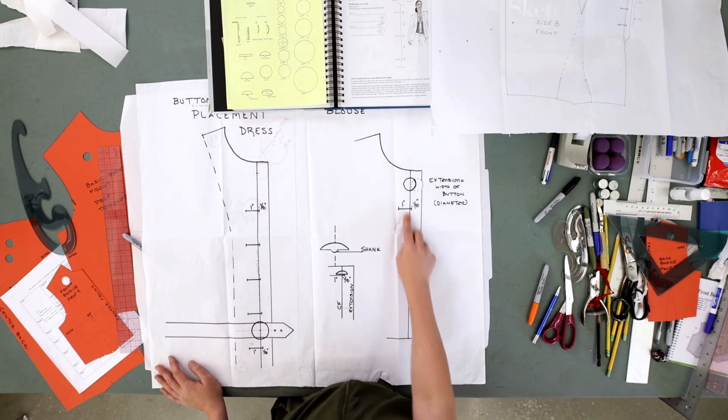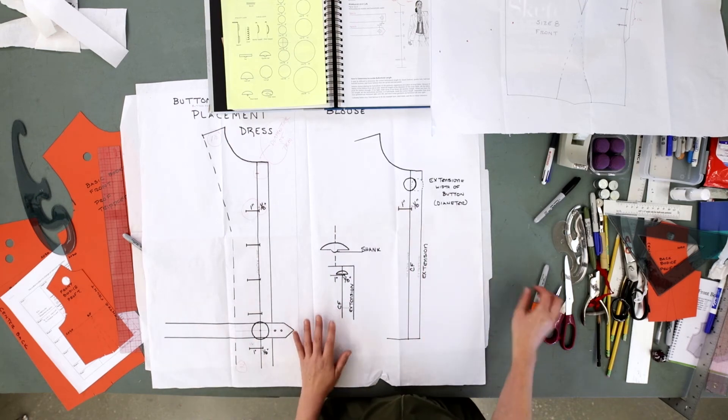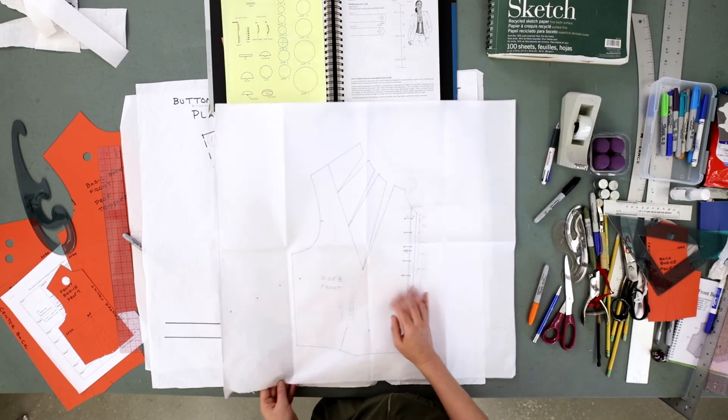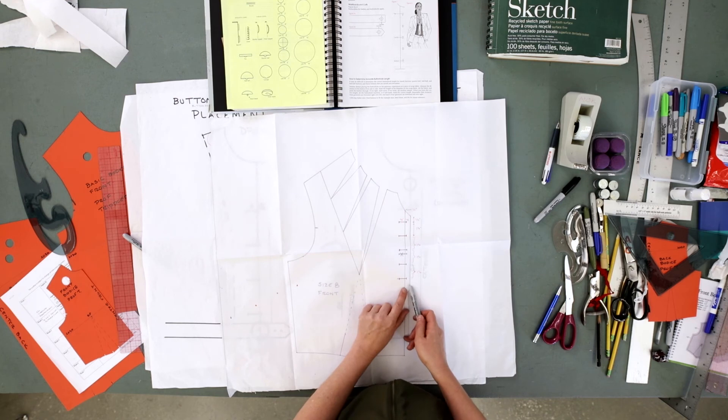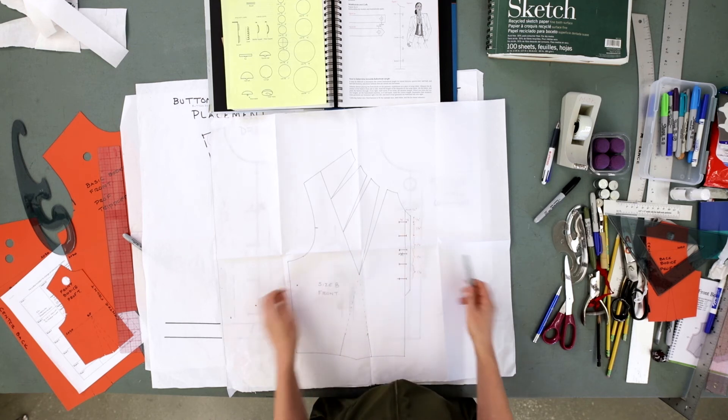Your buttonhole is always going to be placed one-eighth inch forward of the center front. What that means is, if you have a center front, and my button is a quarter of an inch, I would add a quarter of an inch extra for the extension. My buttonhole would be one-quarter of an inch plus an eighth, because you need a little bit of ease to get the button through.